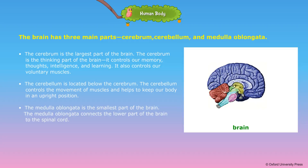The brain has three main parts: cerebrum, cerebellum and medulla oblongata. The cerebrum is the largest part of the brain and is the thinking part. It controls our memory, thoughts, intelligence and learning. It also controls our voluntary muscles.